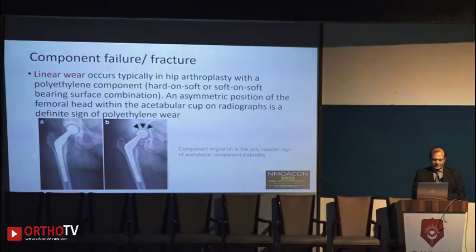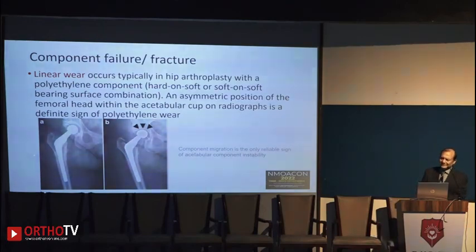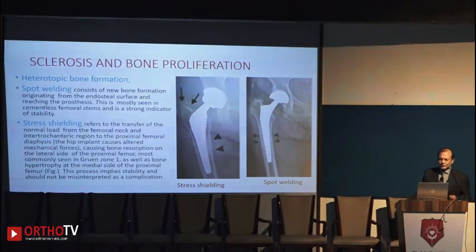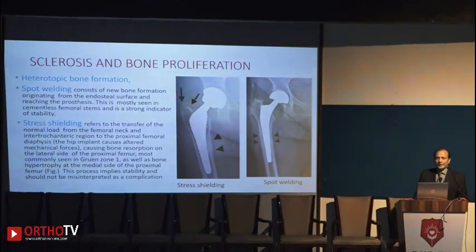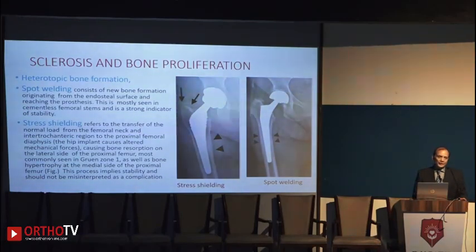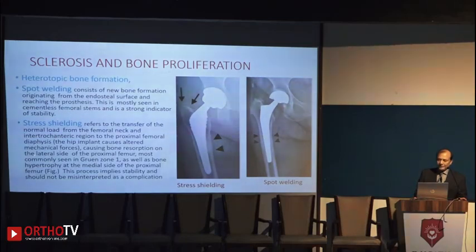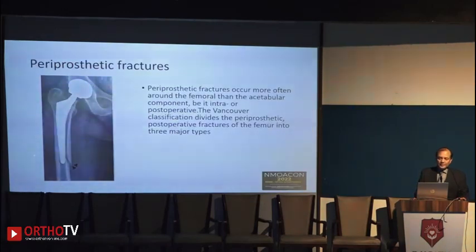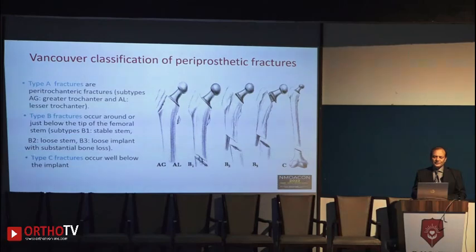This osteolysis can manifest as component failure — for example, linear wear of the acetabular cup due to osteolysis, visible on X-ray, and also caused by plastic wear. Sometimes sclerosis or bone proliferation such as heterotopic ossification — where bone forms in an abnormal position — can be an important cause of stiffness or post-operative pain and needs evaluation and treatment. Stress shielding may show osteolysis less than 2 mm on one side or new bone formation on the medial side, which may be a normal finding. Periprosthetic fracture is another important finding on post-operative X-rays, classified using the Vancouver classification to guide treatment protocols.